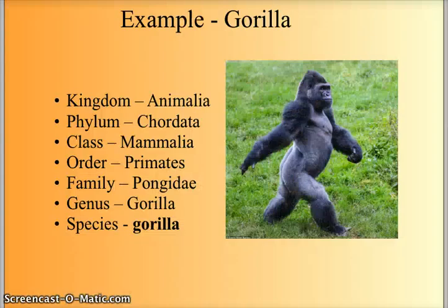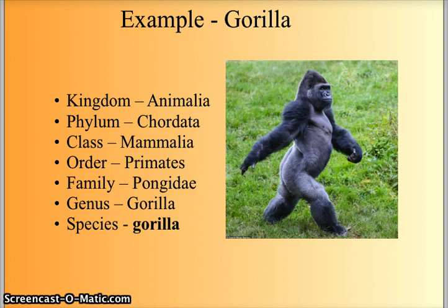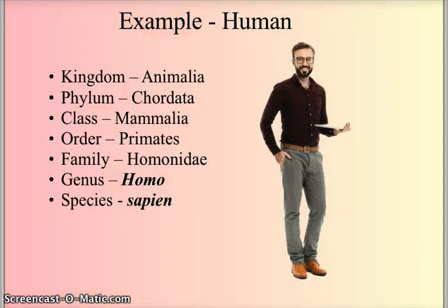Let's look at the gorilla. The gorilla is an animal, has a spinal cord — Chordata. It belongs to class Mammalia. Its order is Primate, family Pongidae. Its genus and species are the same — Gorilla gorilla. Notice the genus is capitalized and the species is not.